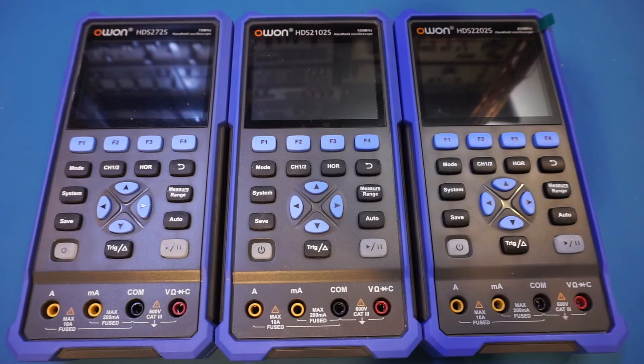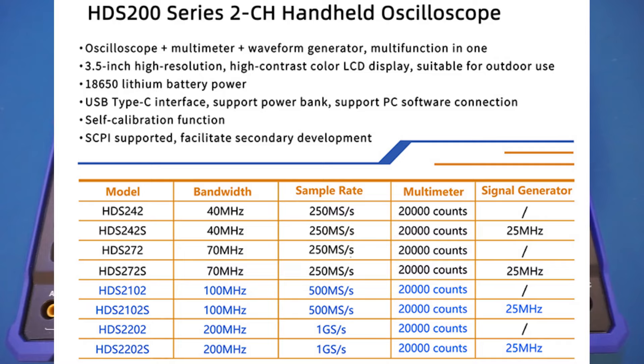But before we do that, let me briefly show you all the models in OWON's HDS200 series lineup. Here on the workbench, I have three of them that I have reviewed before. As you can see here, the main differences between these models are the bandwidth and sampling rate. In fact, the multimeter and signal generator specs are the same for all these models, including the CAT ratings.